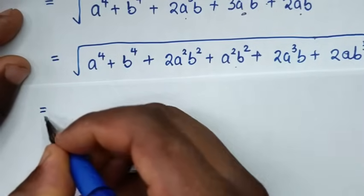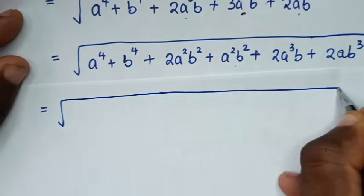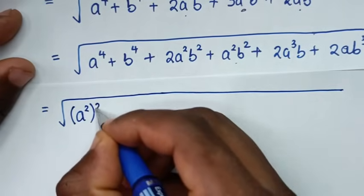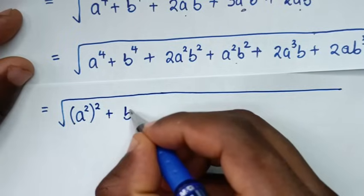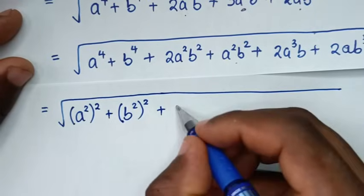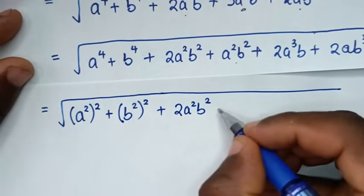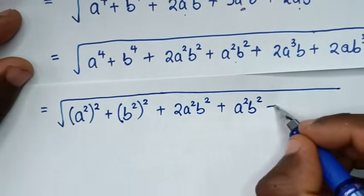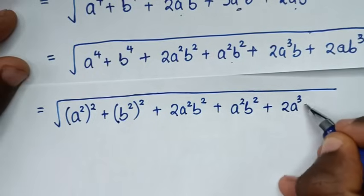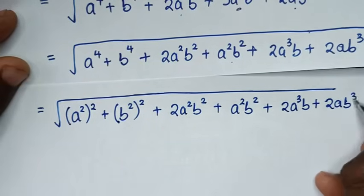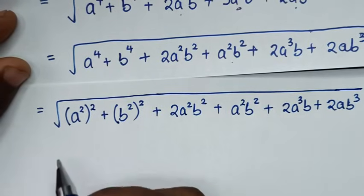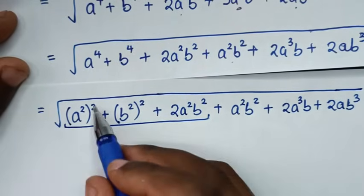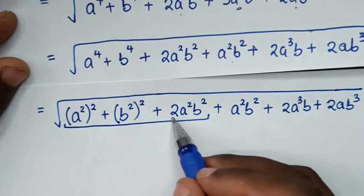Then in the next step, it will be equal to square root of a⁴ + b⁴ plus, where 3a²b² is split as 2a²b² plus a²b², giving a⁴ + b⁴ + 2a²b² plus 2a³b + 2ab³. Note that a⁴ is the same as (a²)², b⁴ is the same as (b²)², and 2a²b² confirms the pattern.